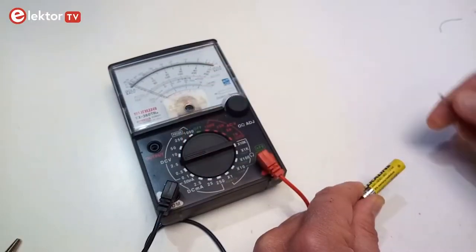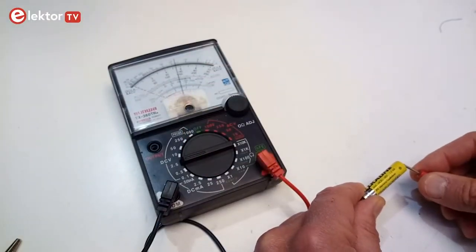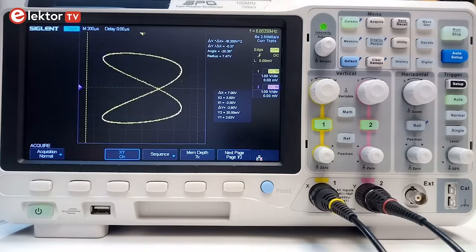Of course, you already invested in a multimeter, which is great, but an oscilloscope can do things you cannot do with a multimeter.